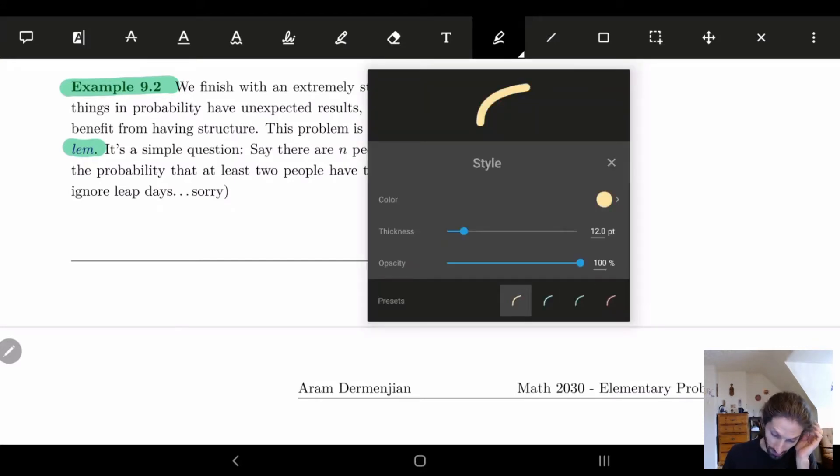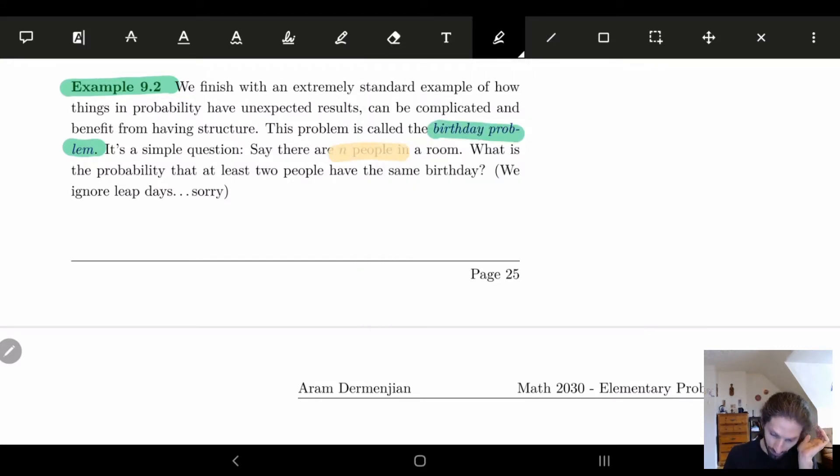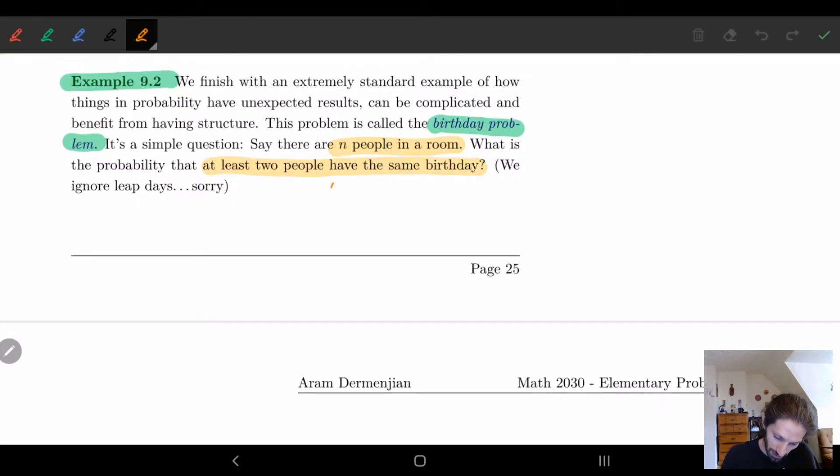We start with n people in a room and the question is: what's the probability that at least two people have the same birthday? We'll set this as event A. Unfortunately we have to ignore leap years. To make numbers easier we're just going to pretend there's 365 days in a year.